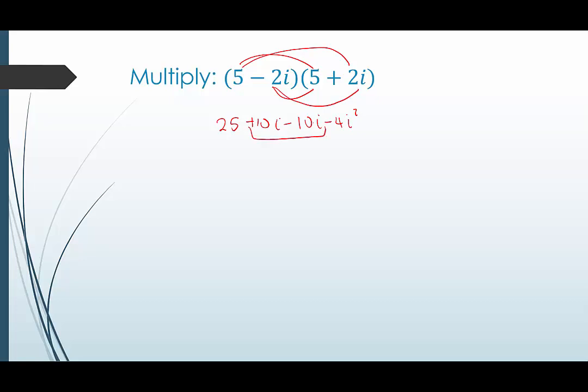And then negative 2i times 2i would be minus 4i squared. Now when we go to combine these like terms, look at that. They cancel out. So we're just left with 25. This becomes negative 1. That would be plus 4. So that would end up being 29.